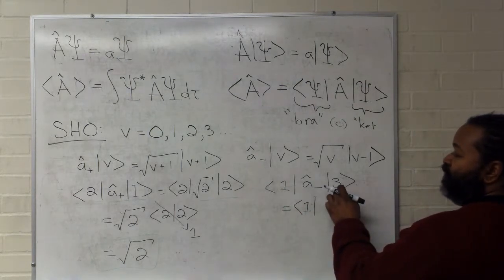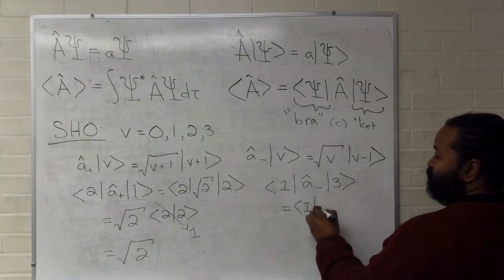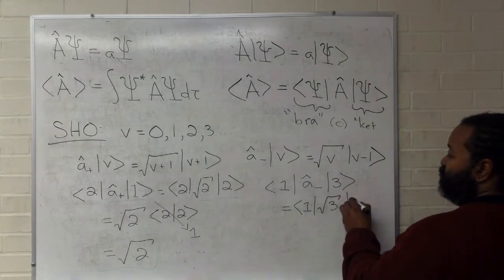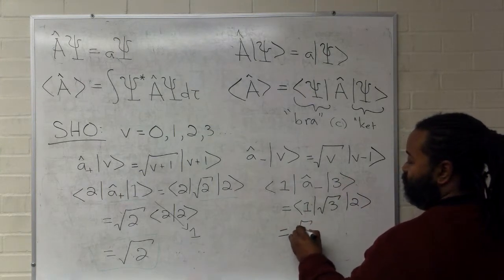So, the bra remains put. We apply this. In this case, we get square root of three. Three minus one is two. We can pull the scalar, square root of three, out.